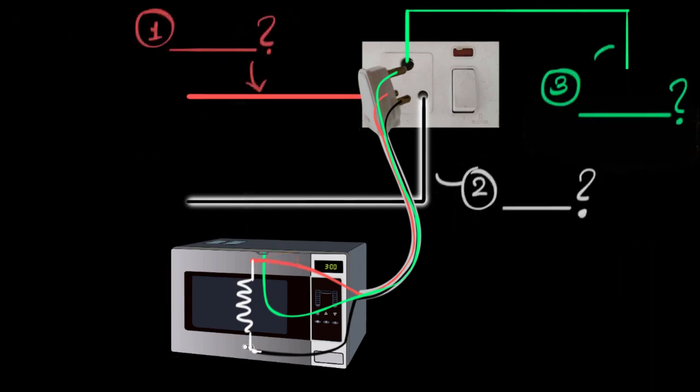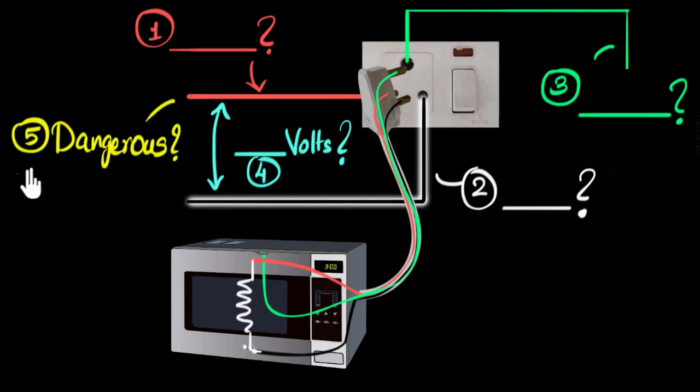Do you remember what are the names of these three wires? Can you recall what is the voltage difference between these two wires in India? Try explaining to your friends or your family, why is it dangerous, more dangerous to touch the red wire compared to the black wire? What's the difference between them? And also, how does the green wire ensure safety?